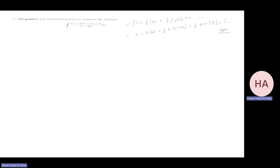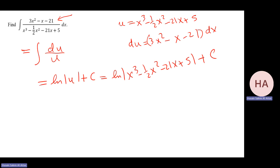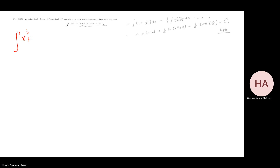Now we start doing these old exam questions. Let me rewrite it. The integrand is x cubed plus 2x squared plus 5x plus 4 over x cubed plus 4x, dx.